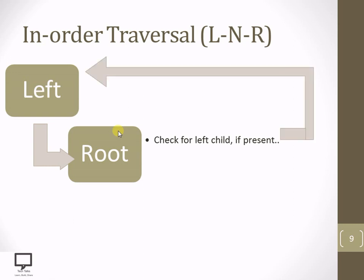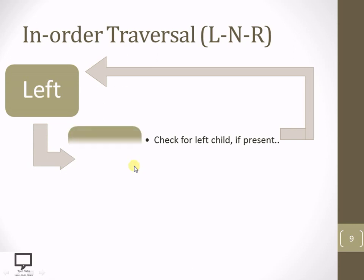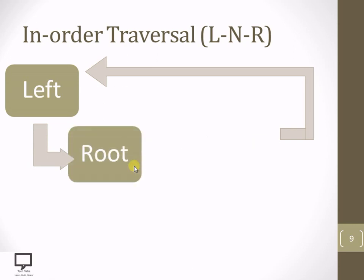If it is present, we need to step down to the left child again and make it the root. After making it the root, we need to check whether this root is having a left child or not. Otherwise, we need to process it, because after covering the left subtree, we need to process the root.